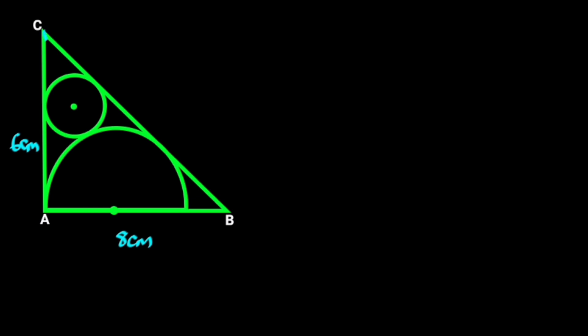First, let's draw a straight line from C to pass through the center of the circle and the center of the semicircle. Next, we draw a perpendicular line from the center of the semicircle to the tangent BC. Let the center of the semicircle be M, and the point of intersection of the perpendicular line to the tangent be N.